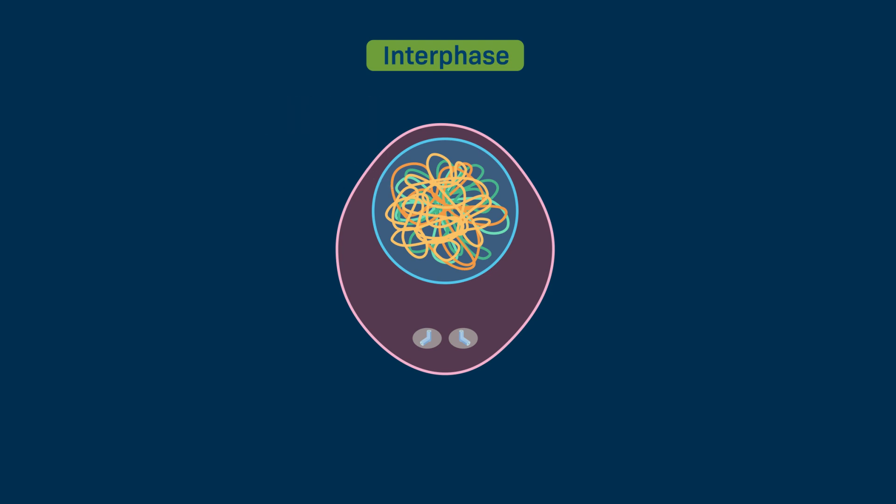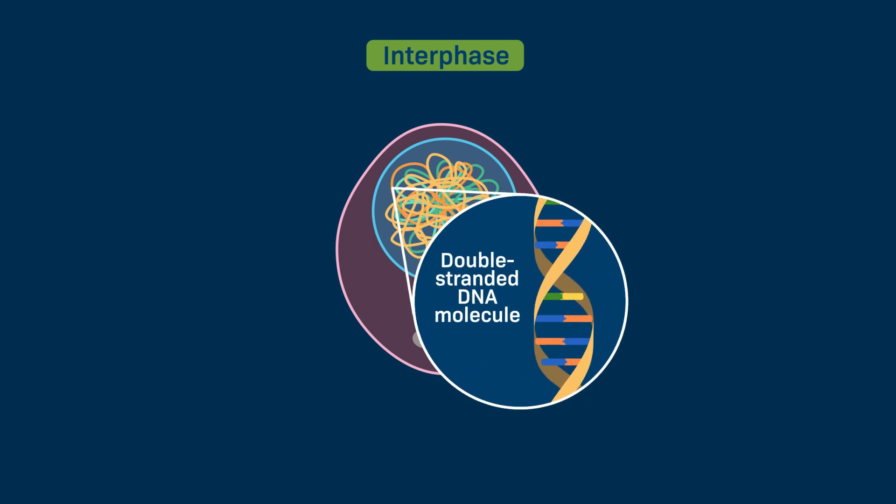Each chromosome is one long, complex molecule that is made up of double-stranded DNA that is bound to proteins. Through the process of DNA replication, the cell copies all of its DNA.